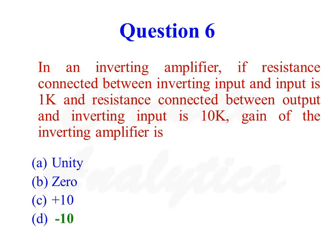In an inverting amplifier, if the resistance connected between the inverting input and input signal is 1k, and the resistance connected between the output and inverting input is 10k, the gain of the inverting amplifier is minus 10. So the correct answer is option number 4.